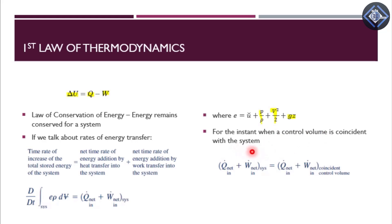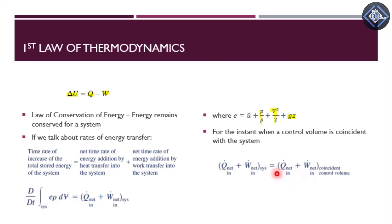Then we talk about the instant when the control volume and the system are coincident — a standard practice we have been doing. At the instant where the control volume and the system are coincident, we have: Q-dot net in plus W-dot net in for the system equals Q-dot net in plus W-dot net in for the coincident control volume. So the rates of heat transfer and work transfer into the control volume equal those into the system at that coincident instant.